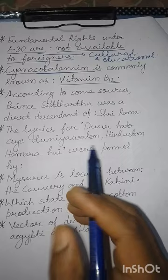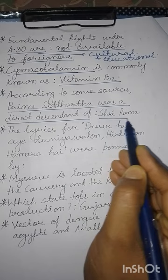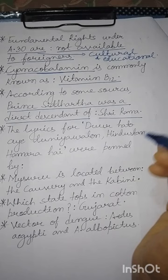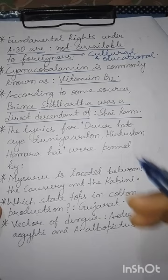According to some sources, Prince Siddharth was a direct descendant of Shri Ram. कुछ बौद्ध स्रोतों के अनुसार भी, राजकुमार Siddharth, जो कि भावी भगवान बुद्ध हुए, वह भगवान श्री राम के वंशज थे।